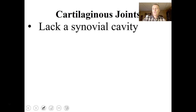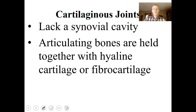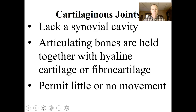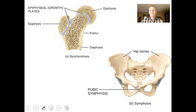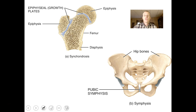Cartilaginous joints also lack a synovial cavity. The articulating bones are held together with hyaline cartilage or fibrocartilage, and they permit little or no movement. Good examples would be the epiphyseal growth plate — made of hyaline cartilage — and the symphysis pubis, which is held together by fibrocartilage.